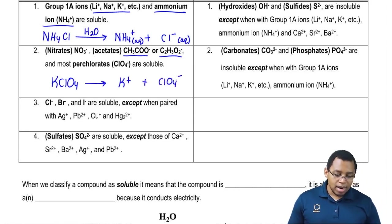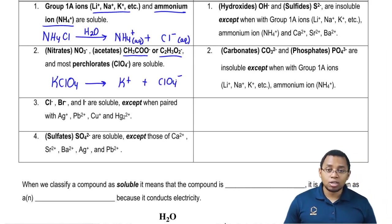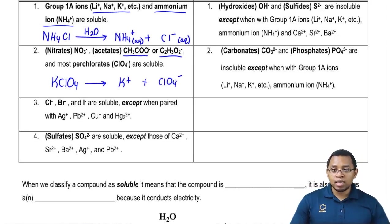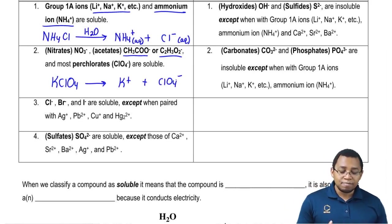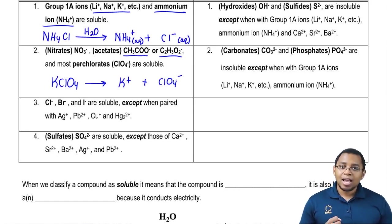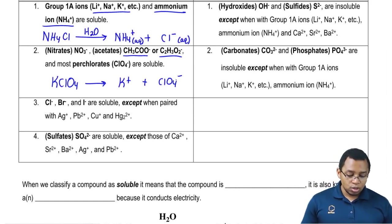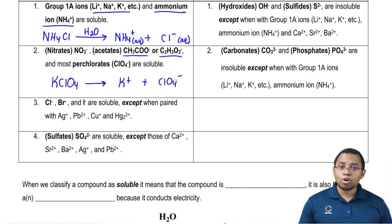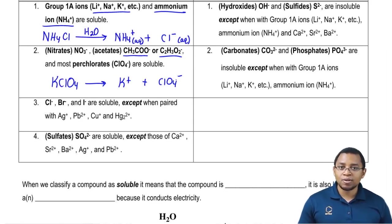Cl⁻, Br⁻, and I⁻ are soluble, meaning they break up when connected with something else, except when they're connected to silver, lead 2, copper 1, or mercury 1. When they're with these, they stay as solids — we say that they're insoluble.